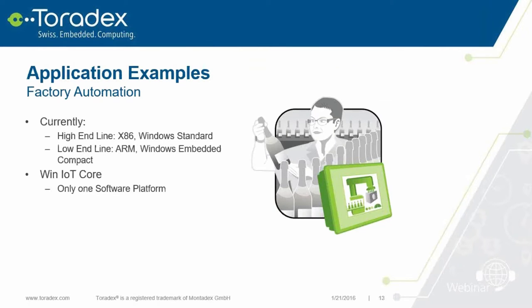Let's talk about a few customer examples. Since a few months ago we've been engaged with a few customers checking their use cases, and most of them are working on proof of concept. One was a factory automation customer with a high-end line using an x86 PC and a low-end one using ARM with Windows Embedded Compact. The problem was keeping two product lines in sync was quite some engineering. With Windows IoT Core, they could run exactly the same application on both devices, simplifying the process quite a bit.